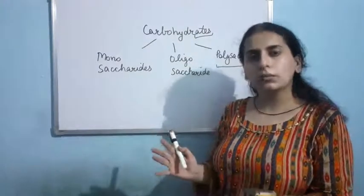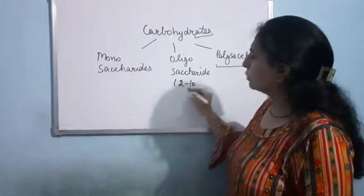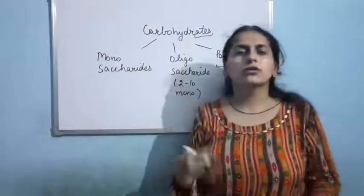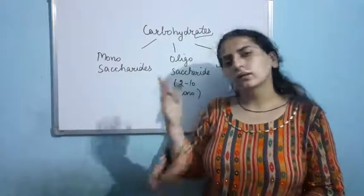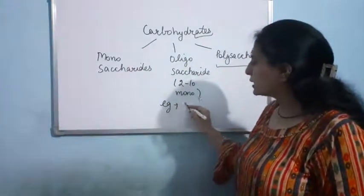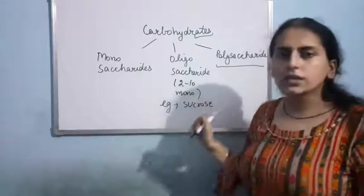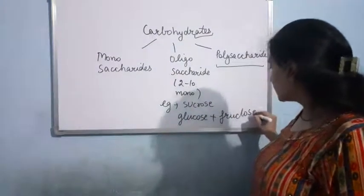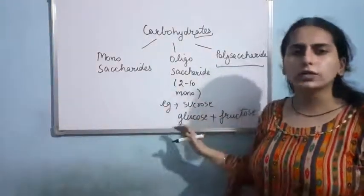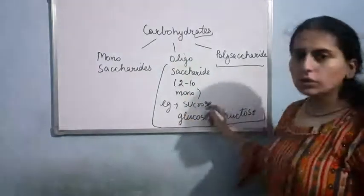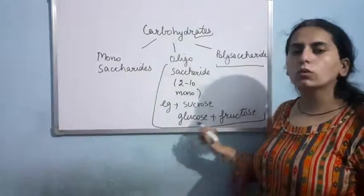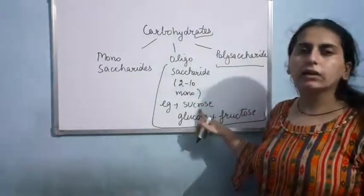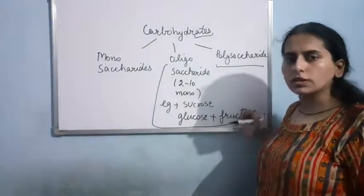If I talk about oligosaccharides, these are formed by two to ten monosaccharides. If two monosaccharides join, it results in an oligosaccharide. An example is sucrose — sucrose is formed when glucose and fructose combine. So sucrose is an oligosaccharide made by two monosaccharides, glucose and fructose. Oligosaccharides can be hydrolyzed further; if you hydrolyze sucrose, you get back glucose and fructose.